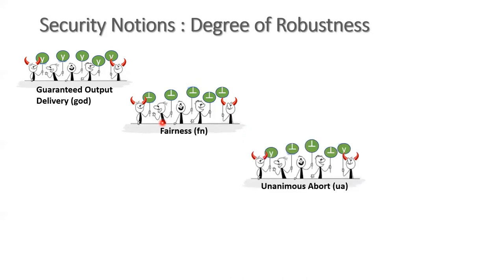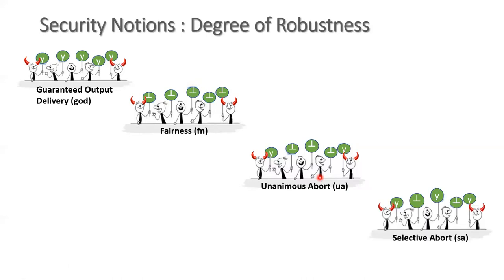An even further weaker notion is security with unanimous abort. Such protocols can be unfair, so it is possible that the corrupt parties obtain the output while the honest parties don't. However, there is an agreement or unanimity amongst the honest parties — the guarantee is that either all honest parties will obtain the output or all of them will abort. Lastly, the weakest security notion is security with selective abort, where the adversary can get unanimity among the honest parties by selectively depriving some of them of the output. For example, the adversary may choose that only the middle honest party gets the output while the other two don't, so there could be a disagreement even amongst the honest parties.